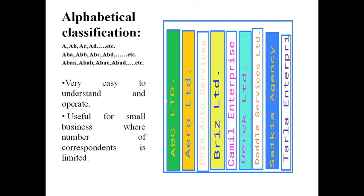Here you have noticed that the files are kept in alphabetical order. The first two files both start with letter A, so the second letter is taken into account — AB comes before AE because E comes after B. After files starting with A, there comes B, then C, D, then S, and then T. This method is very easy to master and operate, and it is useful for small businesses where the number of correspondence is limited.